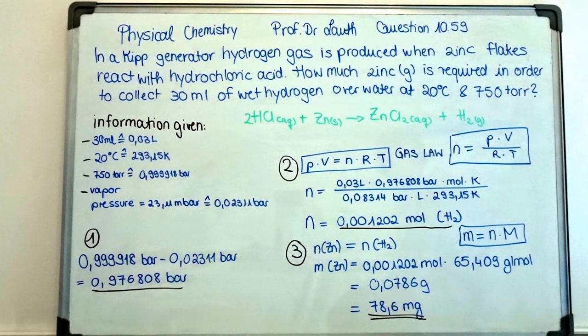In step 2, you can see the ideal gas law. As you remember, we want to calculate the amount of zinc in grams which is needed for the reaction. That is why we are now going to determine the amount of substance of hydrogen in moles.